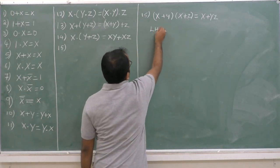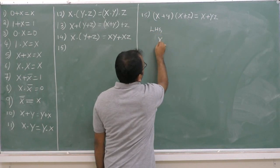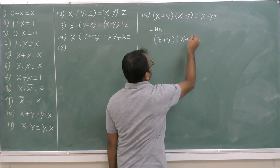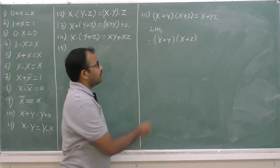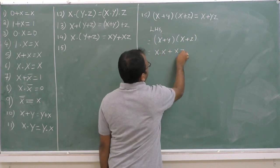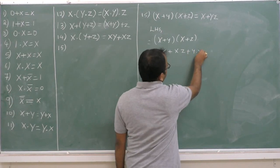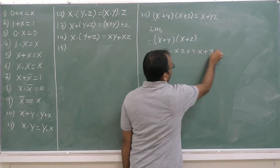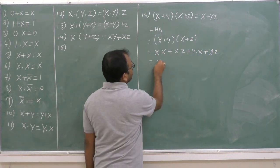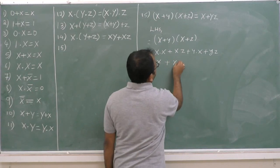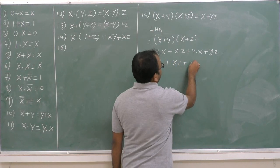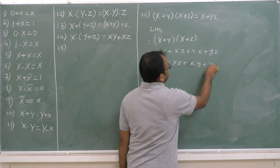Consider LHS. LHS is equal to x plus y into x plus z. Multiplying out, that is x dot x plus x dot z plus y dot x plus y dot z. And then x dot x is equal to x itself, plus xz plus yx plus yz.